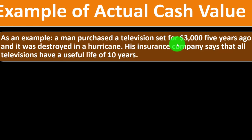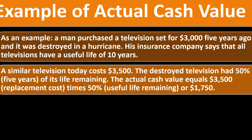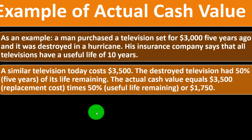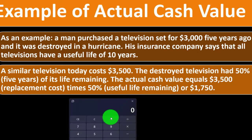A similar television today costs three thousand five hundred dollars. The destroyed television had 50 percent of its life remaining — it lived for five years and they say it only lives for 10 years. So the actual cash value equals three thousand five hundred (replacement cost) times 50 percent, which equals one thousand seven hundred and fifty dollars.